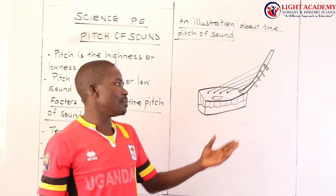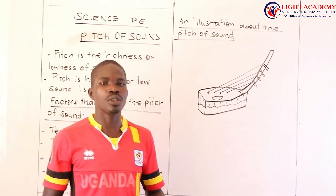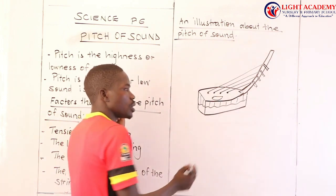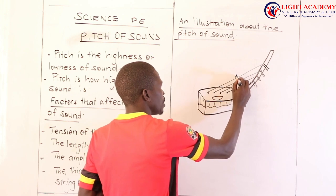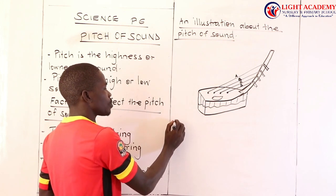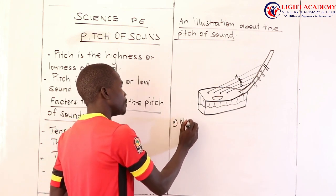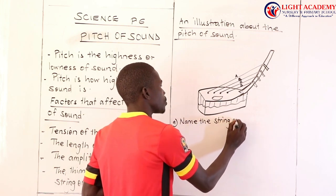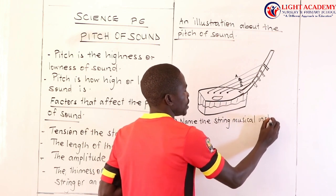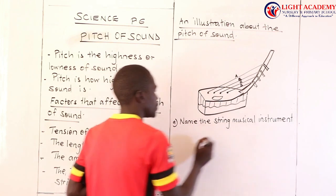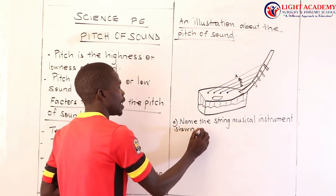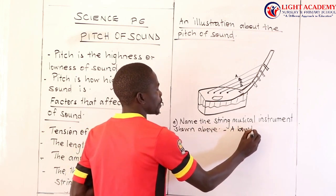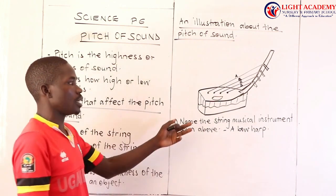They might ask you: name the string musical instrument. So the musical instrument here is a bow harp, under the family of string musical instruments. We find that this is string A, string B, string C, and string D. The first question we ask here: name the string musical instrument shown above. The string musical instrument shown here is called a bow harp.